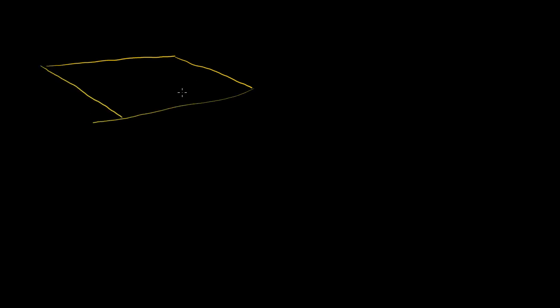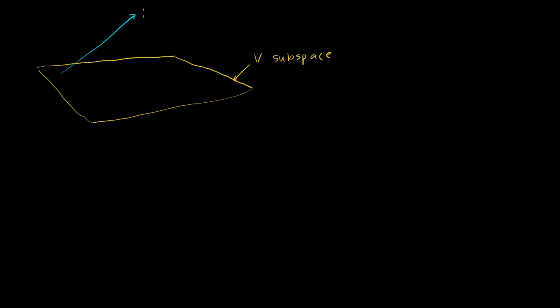Let's say I've got some subspace V that's a plane in R3. Let me draw some plane in R3 — so that is my plane in R3. This is V, this is a subspace. And let's say that I have some other vector x — any vector in R3. So my vector x looks like this. That is my vector x.